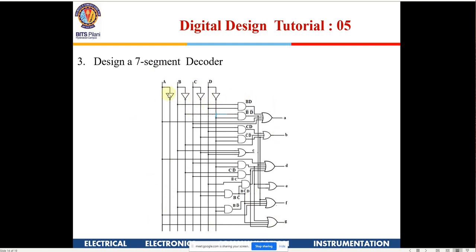The layout has A, B, C, D inputs; all 8 minterms are available. You pick whatever function you want using AND gates, then finally combine with an OR gate. Is this clear to everyone?